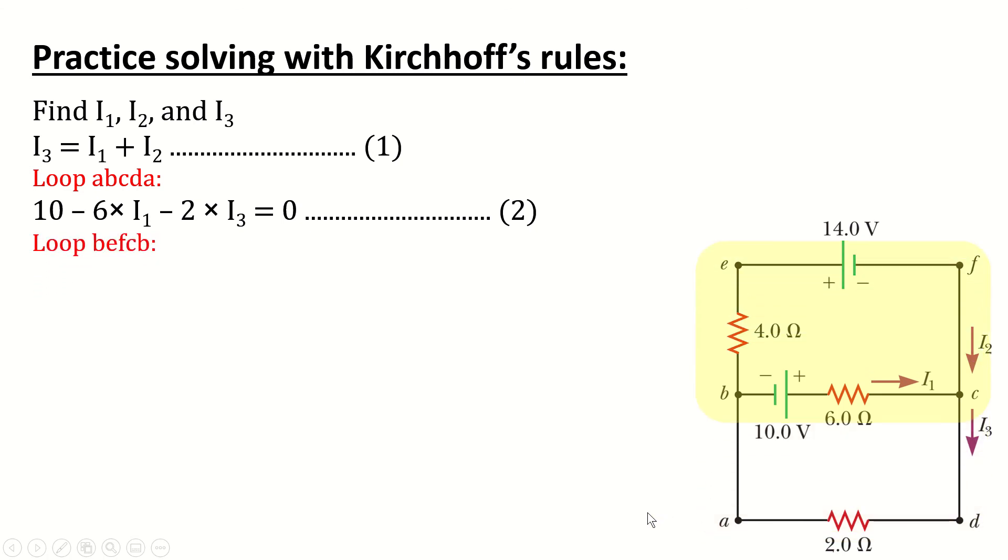For loop BEFCB, here we will begin from the point B, going to E, and back again. So, there's a drop in voltage equals 4 times I2, then another drop because we are traversing from the positive to negative pole in a battery, which equals its EMF negative 14.